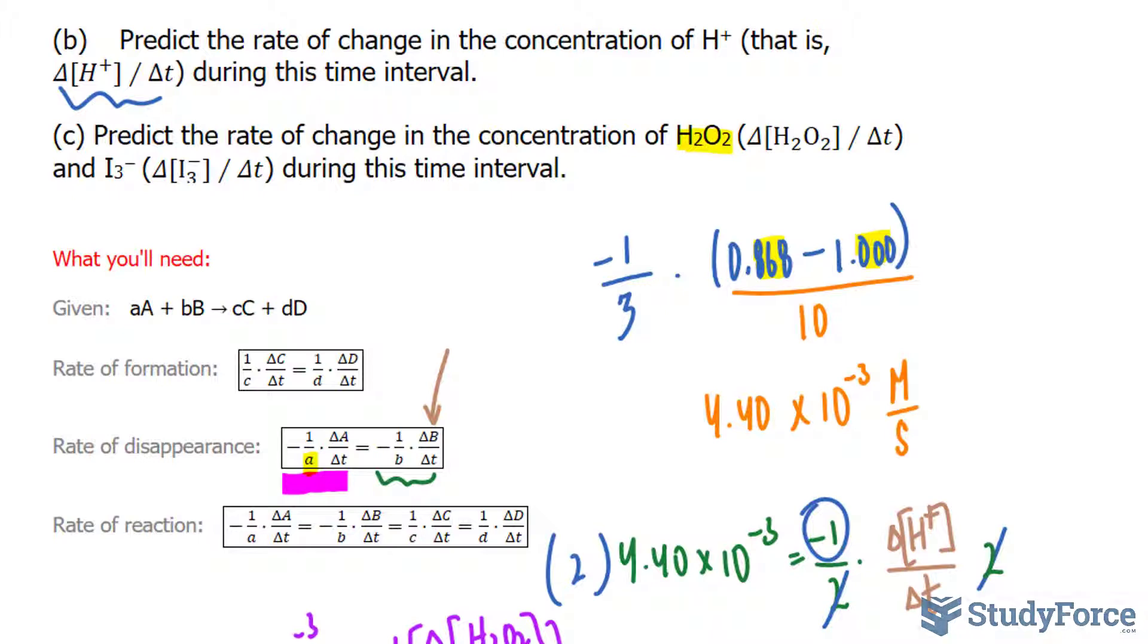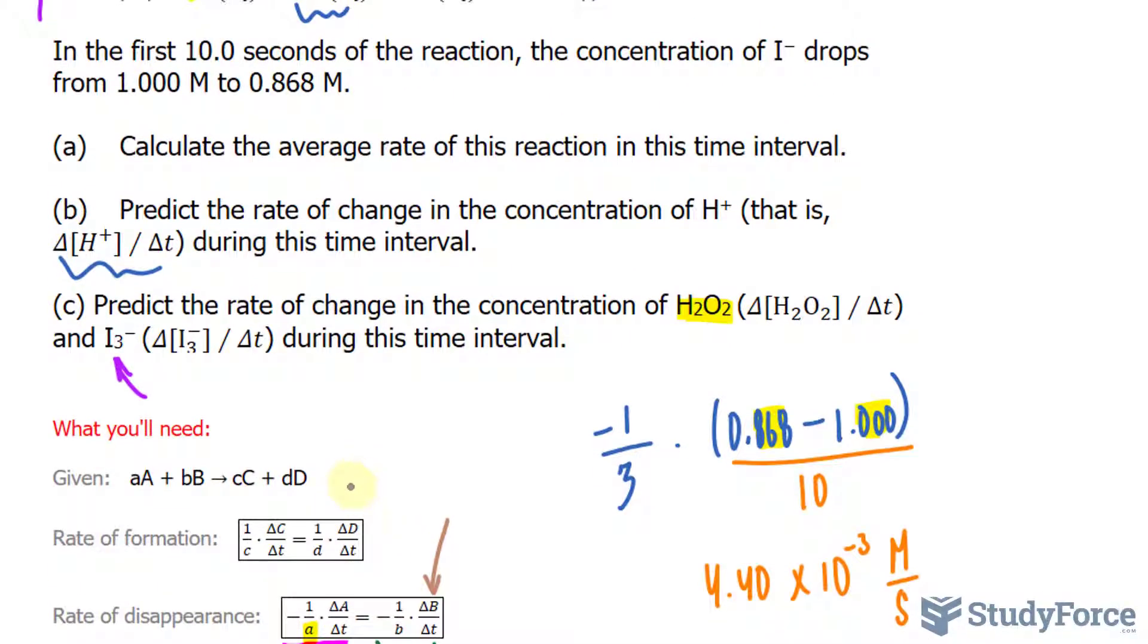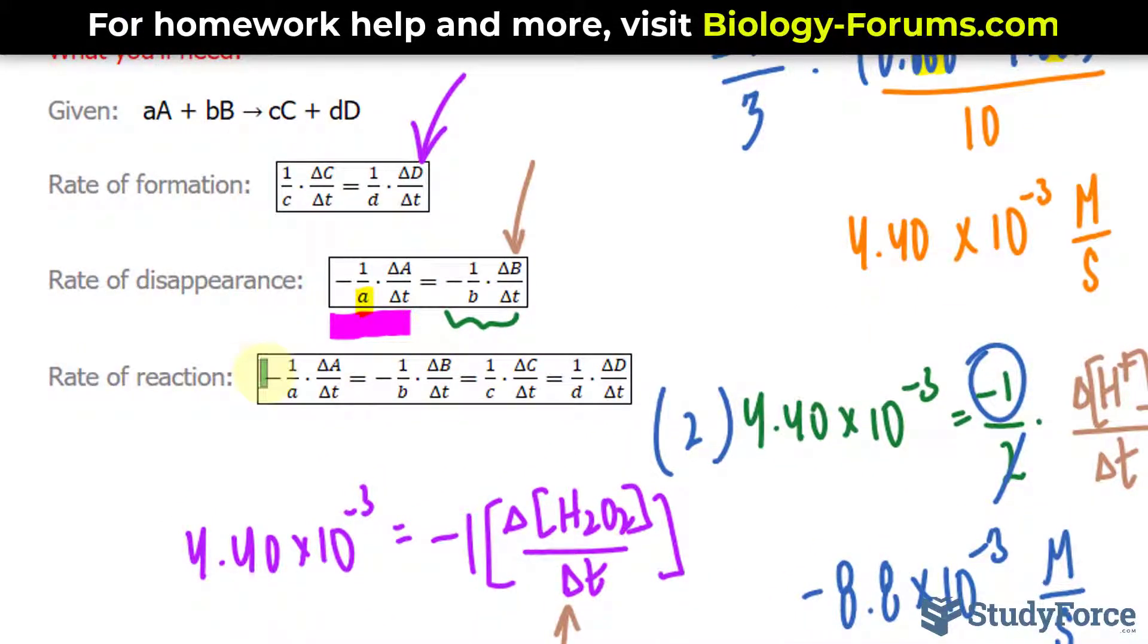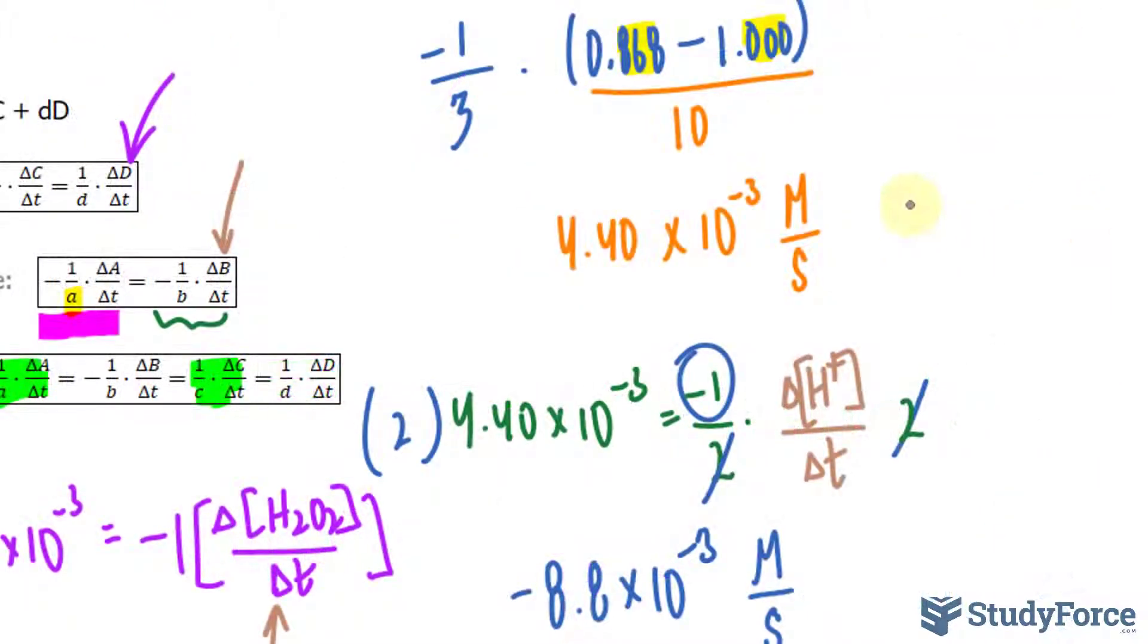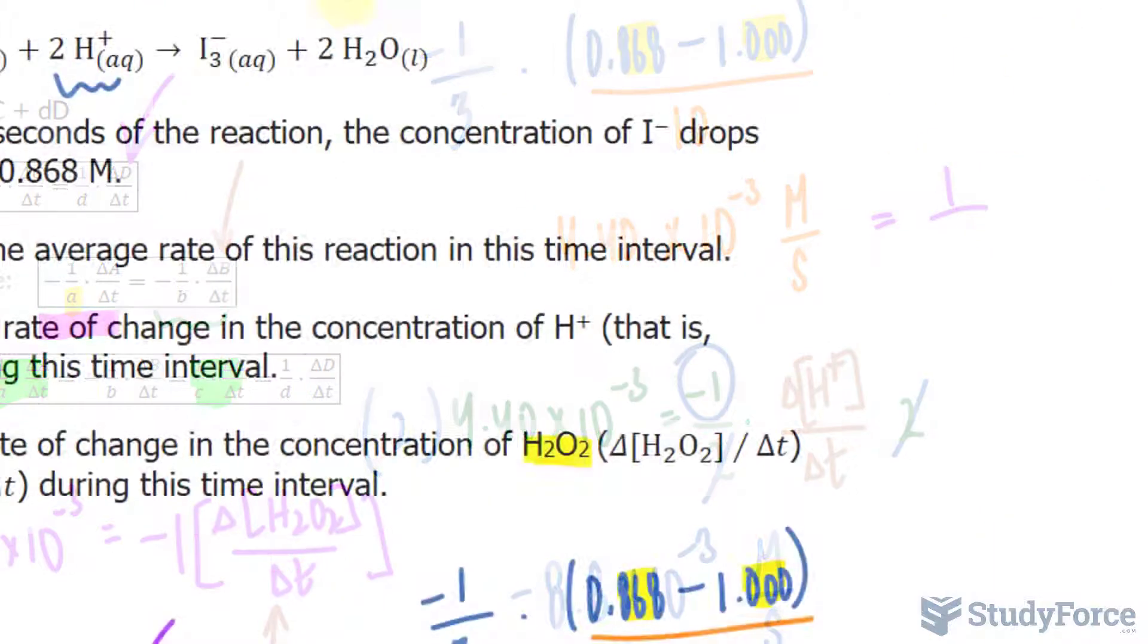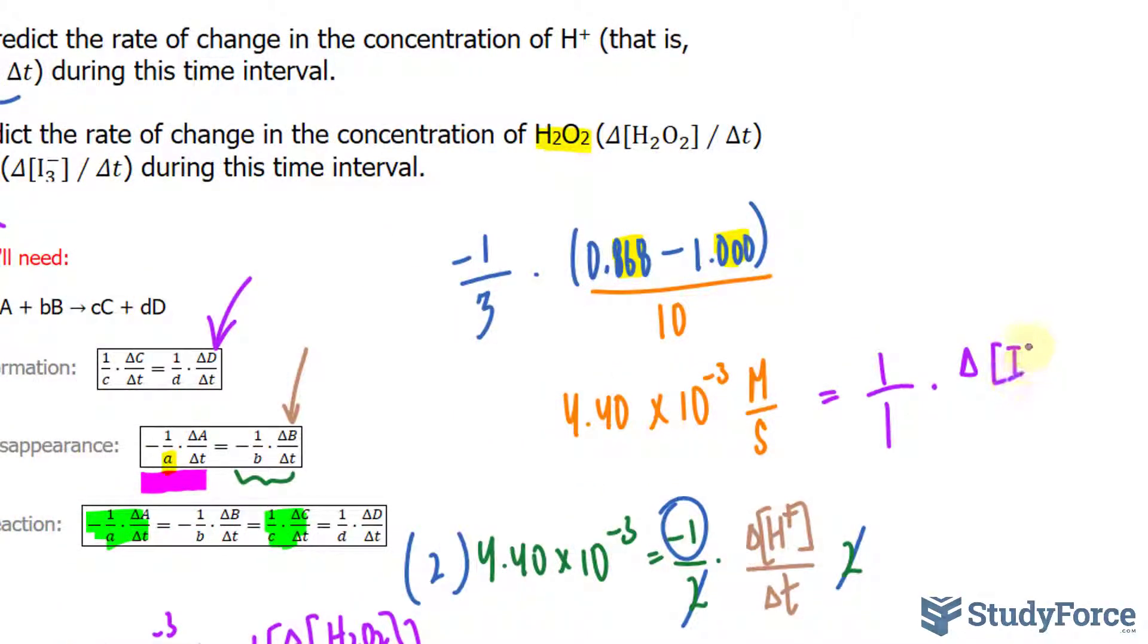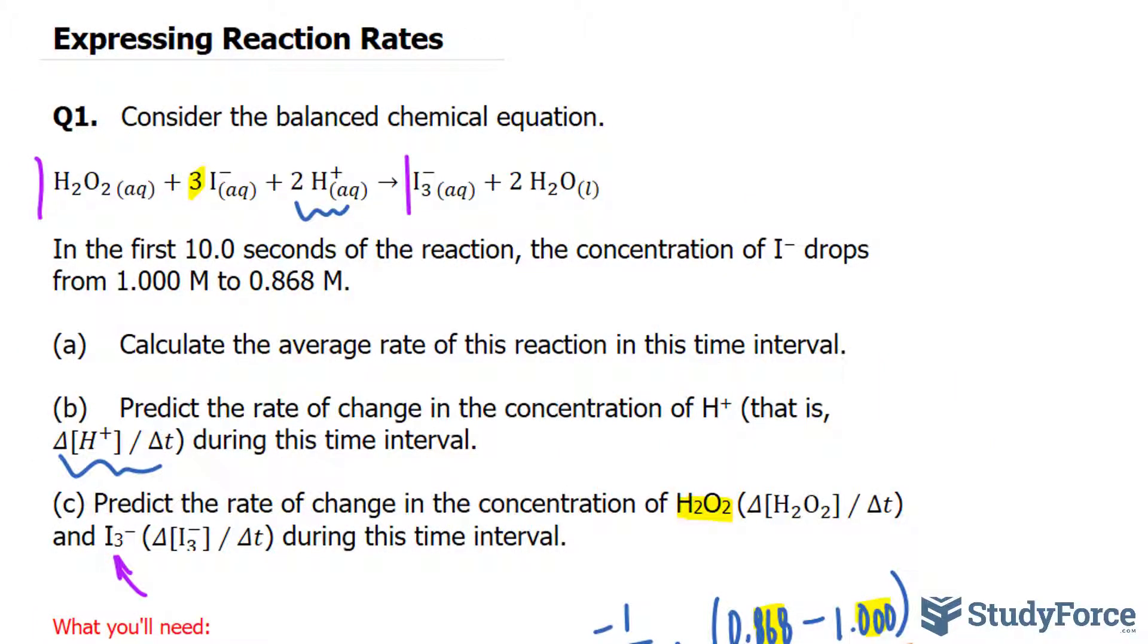And if we want the rate of formation, because this part right here is a product, so we'll use this relationship. What I will do is set, once again, 4.40 times 10 to the power of negative 3, and look at this, we'll make that equal to any one of these, either this one or this one. The right side will be positive, so I'll continue my work on the side, that is equal to 1 over, we have 1 mole, so I'll put 1 as our C, 1 over 1, and we have delta triiodide, its concentration, its molarity, per delta T. Since we have this equaling to 1 times what we're looking for, the rate of change of triiodide is equal to 4.40 times 10 to the power of negative 3, it's the same thing. That is how to calculate the average rate and predict the rate of change in concentrations.